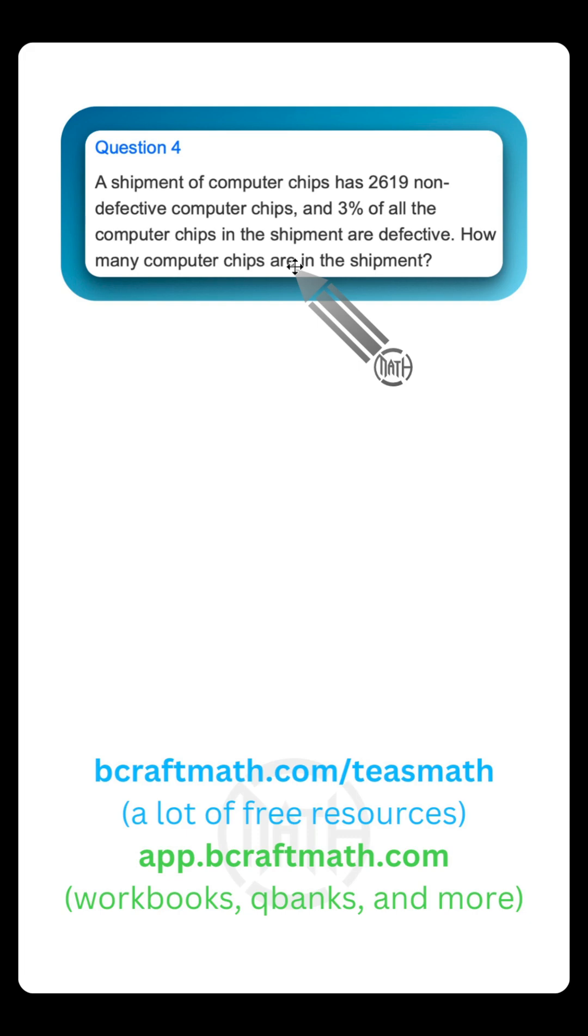You could think of this as the whole. But reading this very carefully, this 2619, that's just the number of non-defective computer chips. The 3% represents the percentage of chips that are defective. Notice we have something talking about non-defective and then something talking about defective. I want to show you two approaches real quick.